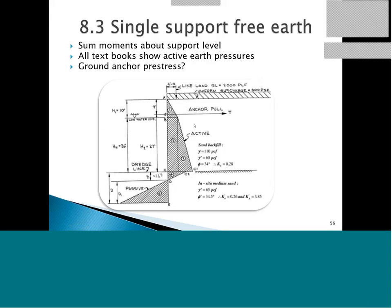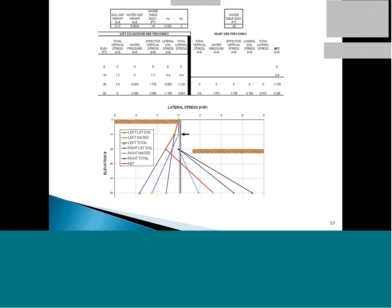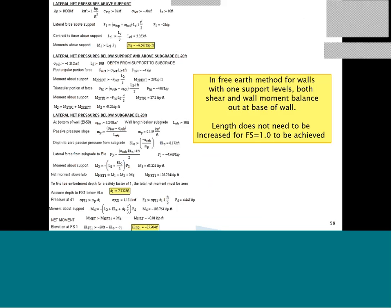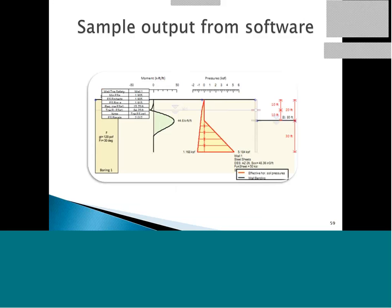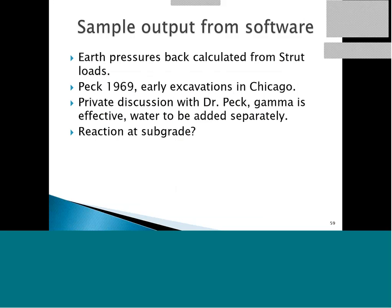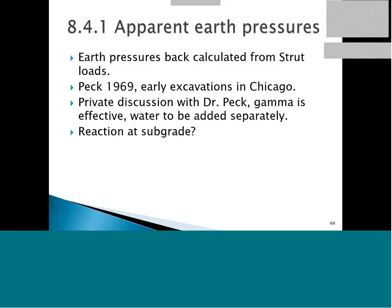Active has worked in the past, probably because we've been conservative on our soil property estimates. For an excavation with a single support, once we have the wall embedment length, we don't need to increase it by 1.2 as for cantilever walls. We just have to increase our wall length to obtain the required safety factors for rotation or wall embedment.